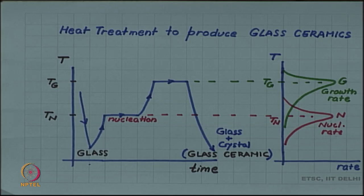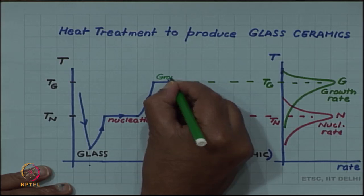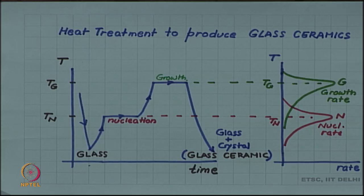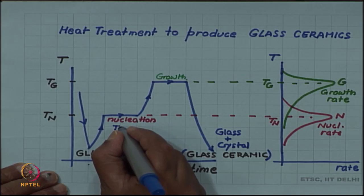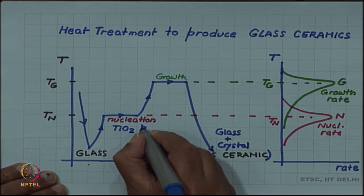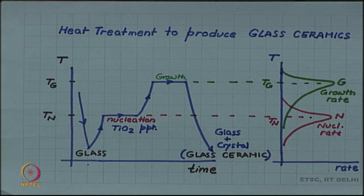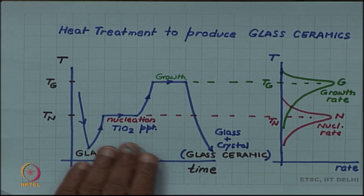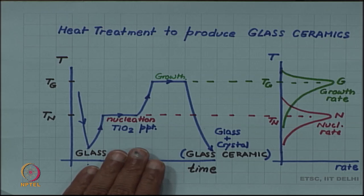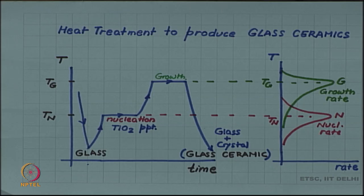One should also note that during the nucleation stage, this was the growth stage, and during the nucleation stage, some heterogeneous nuclei, for example TiO2, precipitate. We have seen that heterogeneous nucleation is easier than homogeneous nucleation. These TiO2 precipitates form in the glass and they act as heterogeneous nucleation sites, which further enhance the nucleation rate.